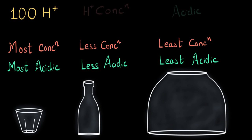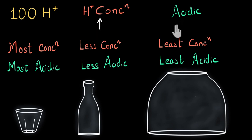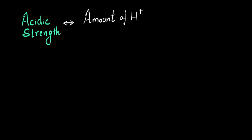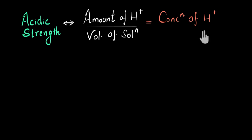Let's write down the relationship between H+ ion concentration and the acidic nature of the solution. If the H+ ion concentration is more, the solution is more acidic. If the H+ ion concentration is less, the solution is less acidic. So far we have seen that acidic strength does not only depend on the amount of H+ present, but also on the volume of the solution — and this ratio is called the concentration of H+ ions. If the concentration increases, the acidic strength is more. If the concentration of H+ is less, the acidic strength is going to be less.